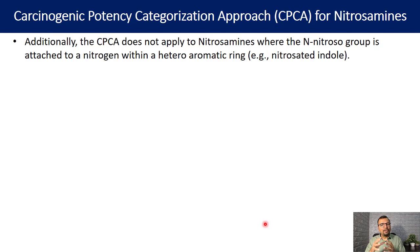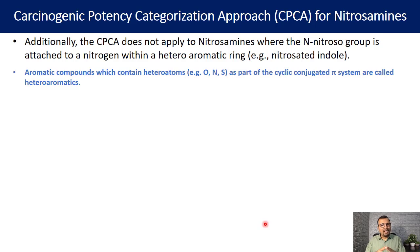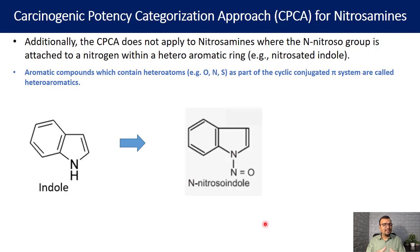Additionally, the CPCA does not apply to nitrosamines where the N-nitroso group is attached to a nitrogen within a heteroaromatic ring, with indole given as an example. A heteroaromatic compound is any aromatic compound that contains heteroatoms — such as oxygen, nitrogen, or sulfur — as part of the cyclic conjugated pi system. In the indole example shown, the nitrogen is included in the ring, making it a heteroaromatic compound. If a nitroso functional group (N=O) is connected to the nitrogen inside such a ring, the compound is excluded from the Carcinogenic Potency Categorization Approach.